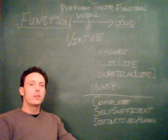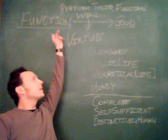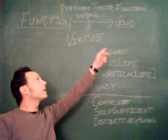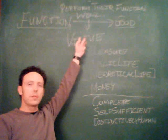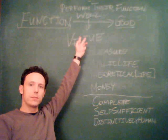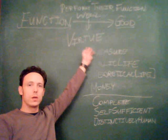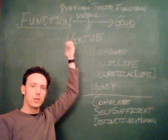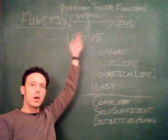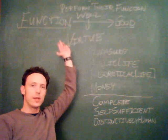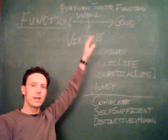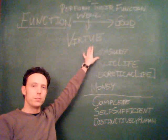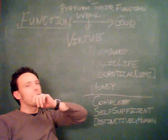So, in this argument that I call the function argument, of all things that have a function, the good for that thing is to perform its function well. That is, in accord with virtue. So, the virtue of this watch is that it tells time well. So, a good watch is one that performs its function well. That is, its virtue.